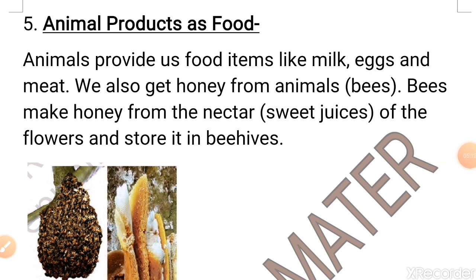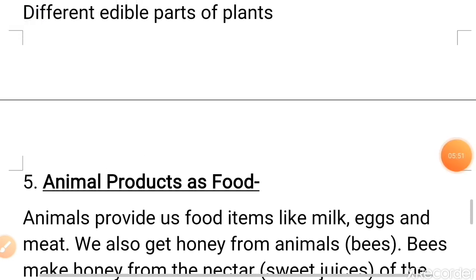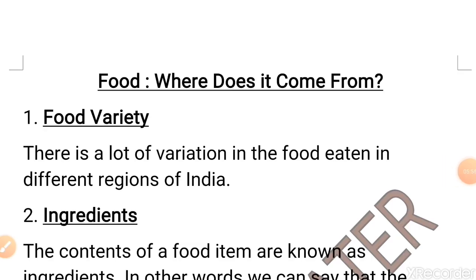Animal products as food. Animals provide us food items like milk, egg and meat, which we have discussed earlier. We also get honey from animals. Honey is provided by bees — bees make honey from nectar. Nectar is the sweet juice of flowers, and bees store it in beehives. A beehive is the home of bees. Today you have explored the animal and plant sources of food, why we need food, and why food depends on age, geographical area and many other things like ingredients.